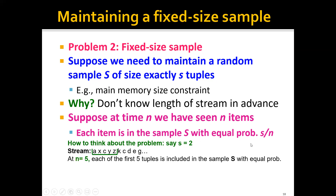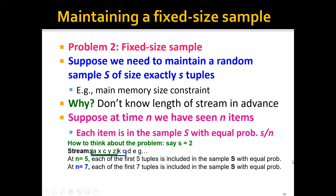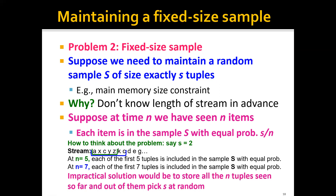At time n equals five, we want that each of the first five tuples is included in sample S with equal probability. Not only that, we also want that at time n equals seven, each of the first seven tuples is included in sample S with equal probability. An impractical solution would be to store all n tuples and then pick S elements at random — this is not possible because we only have space to save two elements, so we cannot afford to save all n tuples.